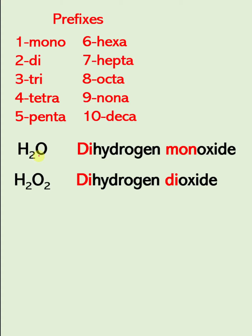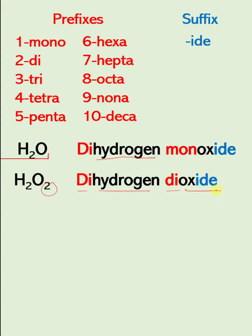So here again, we have two atoms of hydrogen, so we have dihydrogen. Then as you observe, for the second element, instead of oxygen, we change the ending to -ide. So the suffix is changed to -ide. So the first element stays the same: dihydrogen. Then for the second element, we have one oxygen, so that is monoxide. Then for H2O2, we have two hydrogens — dihydrogen — then two oxygens. Again, for the ending, change it to -ide.